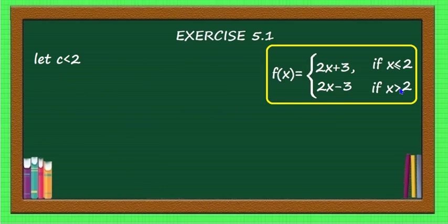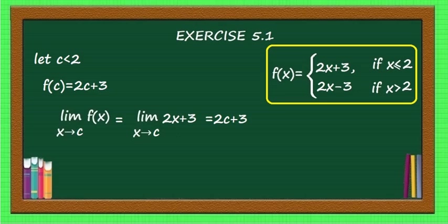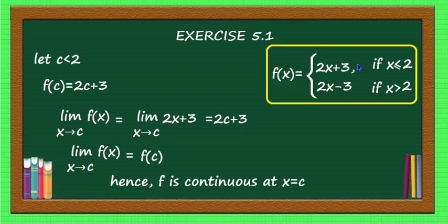Case 1: c < 2. When x < 2 the function is defined as 2x + 3, so f(c) = 2c + 3. The limit as x → c of f(x) equals the limit of 2x + 3 = 2c + 3. You need not take one-sided limits here because both sides of c are still less than 2. Since the limit equals f(c), f(x) is continuous at x = c. Thus f is continuous at every real number less than 2.